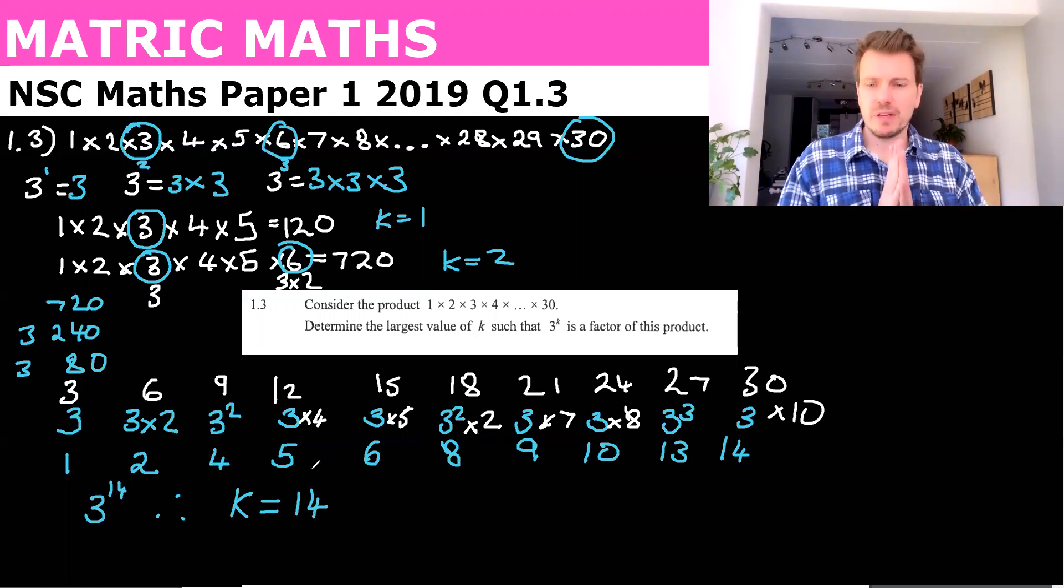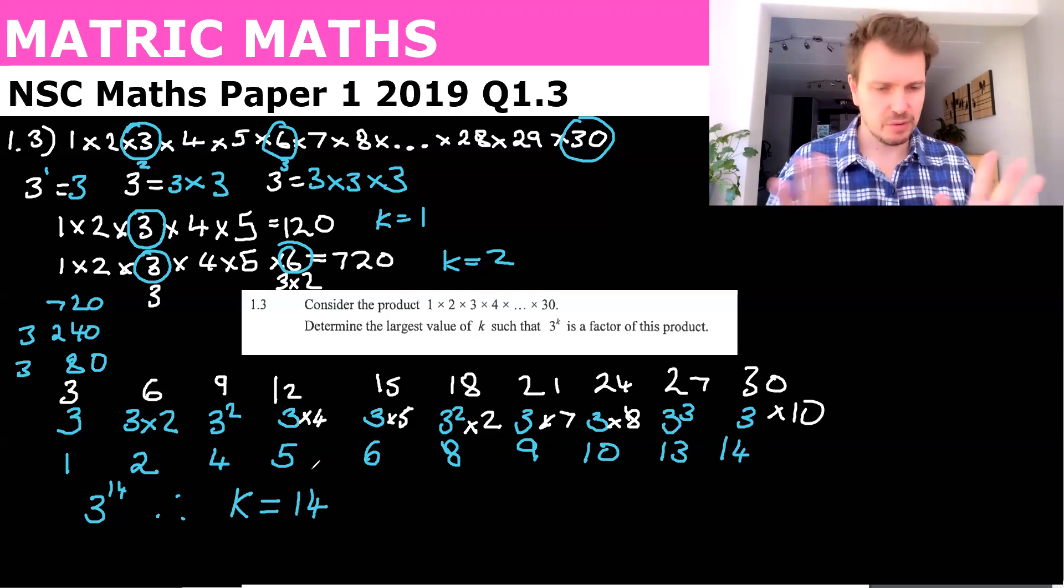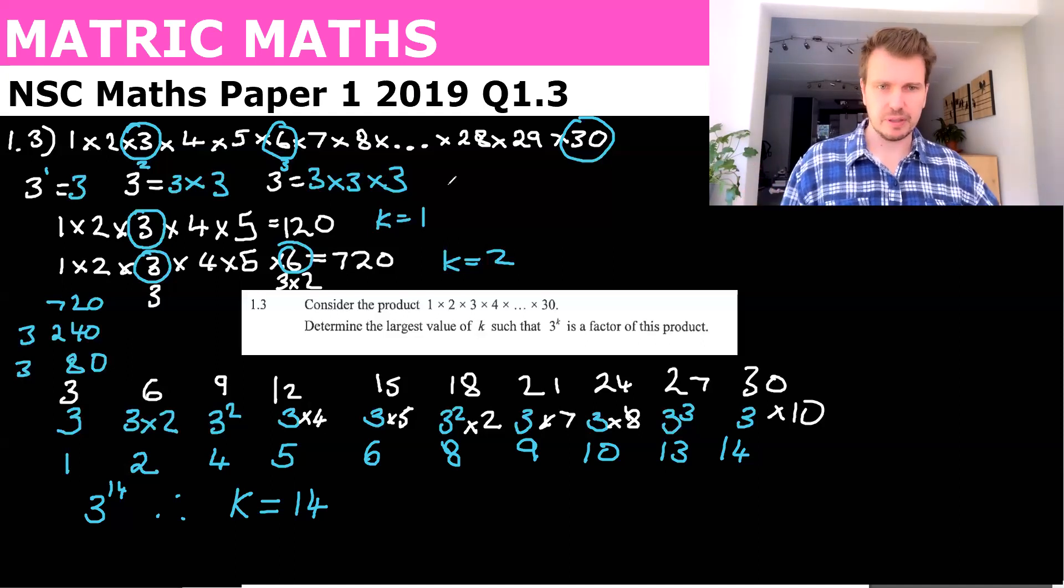So hopefully that made a bit more sense. This was a 4 mark question. The memo has still not been released. So this, as far as I know, is the only one I could find on the internet. If anyone sees anything that could help improve on this, but this is definitely the answer. I've checked with some of my mathematics friends, and we all agree on this. So hopefully that helped.